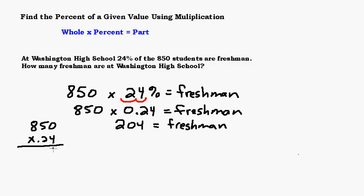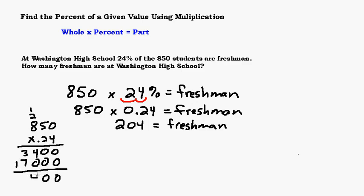Let's just do this out. 4 times 0 is 0. 4 times 5 is 20, carry the 2. That's 32 plus 2 is 34. Add a 0. 2 times 0 is 0. 2 times 5 is 10, carry the 1. 2 times 8 is 16, plus 1 is 17. Carry the 1. Now, in order to place your decimal, you need to count how many places in your original numbers are to the right of the decimal — there are two: the 4 and the 2. So you move your decimal two places and come up with a final answer of 204.